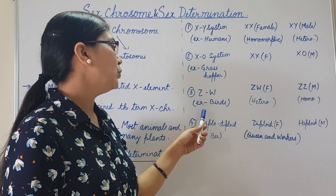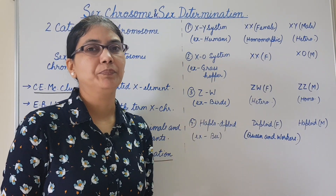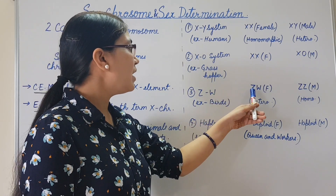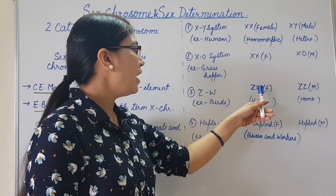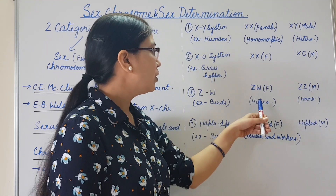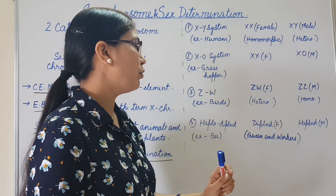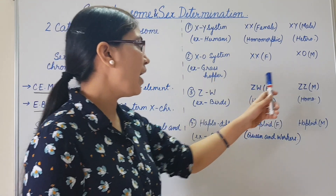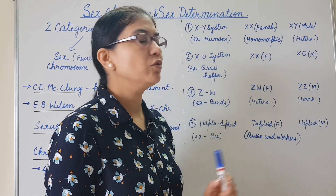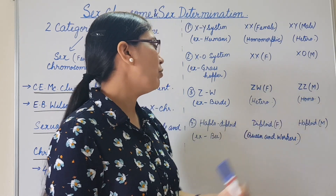The third is the ZW system, example: birds. Here, females have one Z and one W chromosome, so females are heteromorphic, and males have a pair of Z chromosomes, so males are homomorphic.